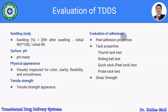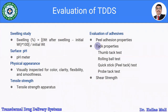As the transdermal patch is applied to the skin with the help of an adhesive, there is a need to evaluate adhesive properties. Tests used include peel adhesion properties, tack properties, and shear strength. For tack properties there are four tests: thumb tack test, rolling ball test, quick stick or peel tack test, and probe tack test.